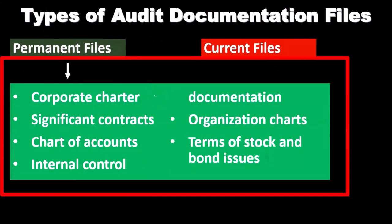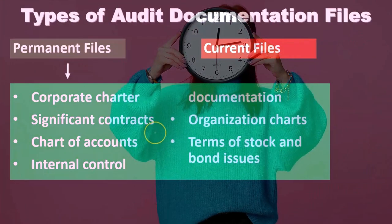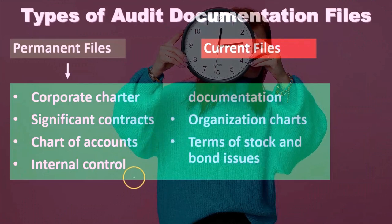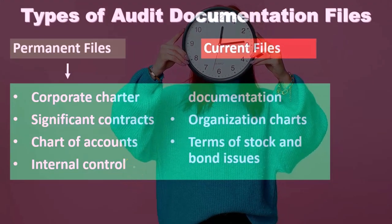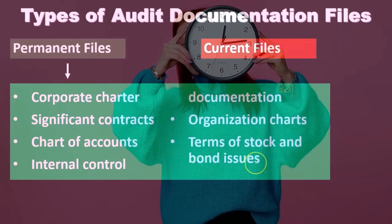These are the typical types of items that go in the permanent file: the corporate charter, which obviously isn't going to change all the time; significant long-term contracts, which we want to have in the permanent file; possibly the chart of accounts; and internal controls, which can be set up and established for a long period of time.